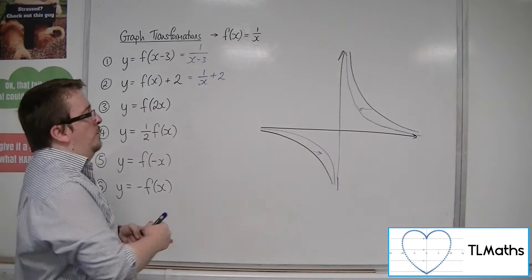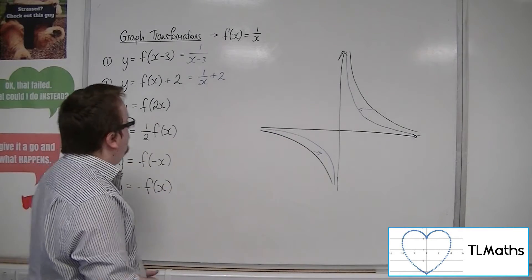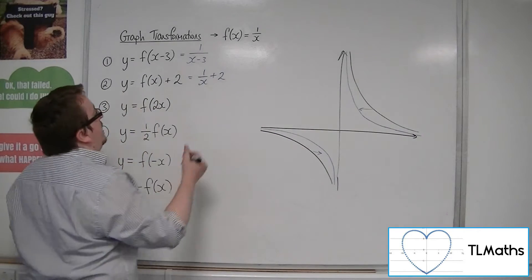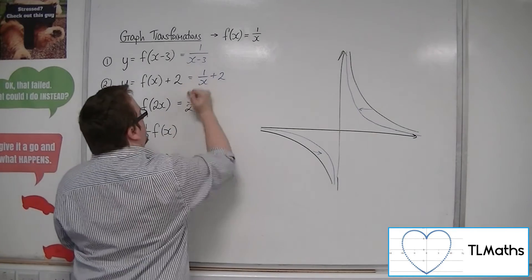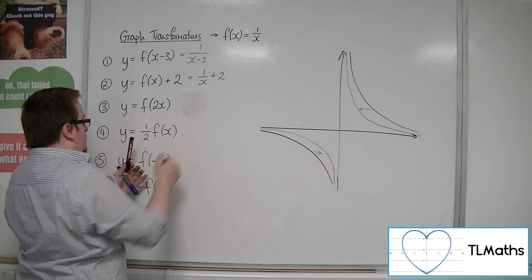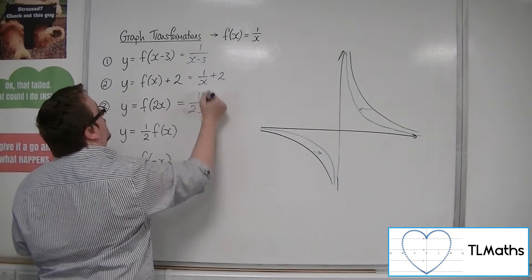So, it will be stretched inwards. Now, the equation of it will be 1 over 2x, because I'm replacing... Oh, let's be consistent, shall we? Be 1 over 2x, because we're replacing the x with 2x in the function.